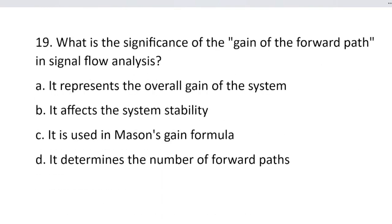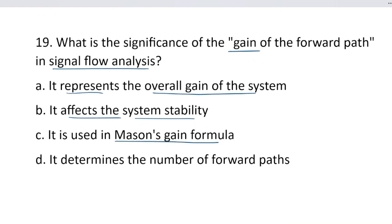Question number 19. What is the significance of the forward path gain in signal flow analysis? Option A, it represents the overall gain of the system. Option B, it represents the overall gain of the system. Option C, it affects system stability. Option D, it determines the number of forward paths. The correct answer is option A — it represents the overall gain of the system.